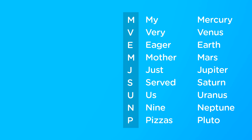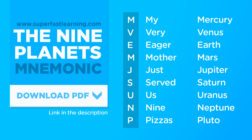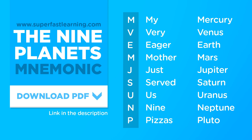M for Mercury, V for Venus, E for Earth, M for Mars, J for Jupiter, S for Saturn, U for Uranus, N for Neptune, P for Pluto.